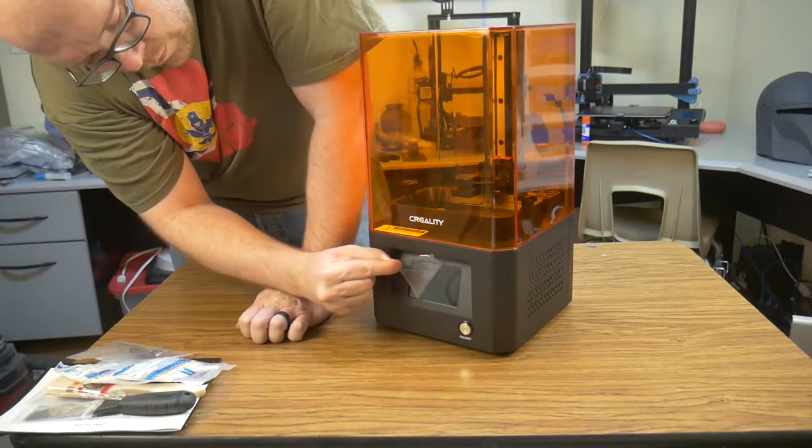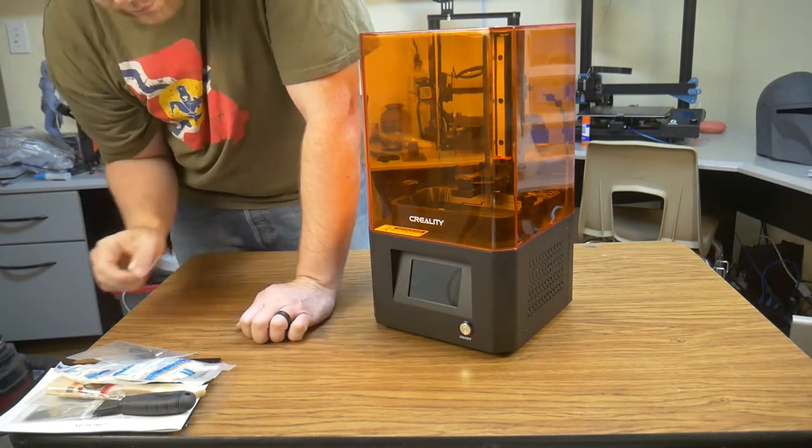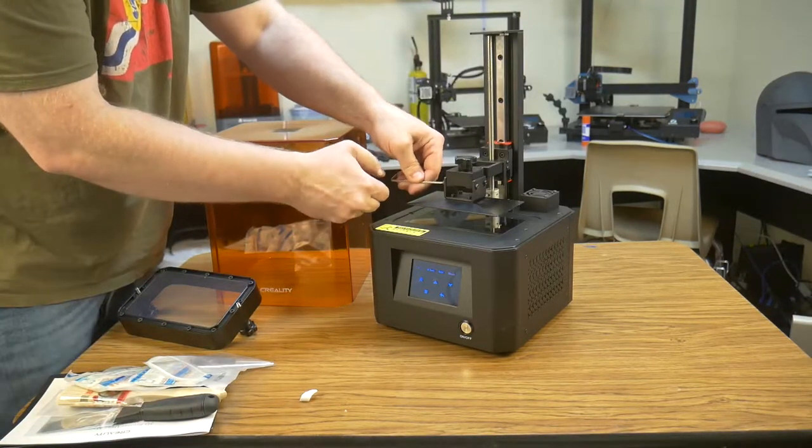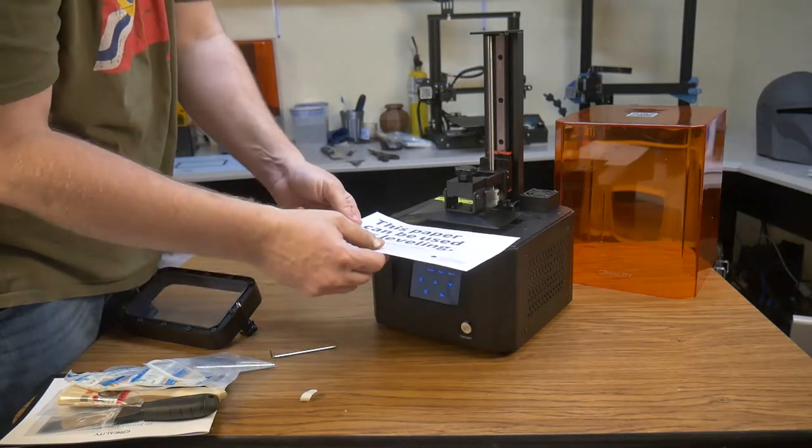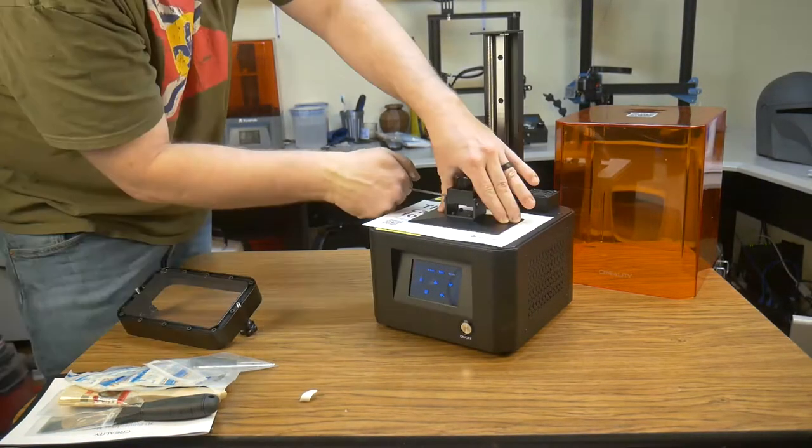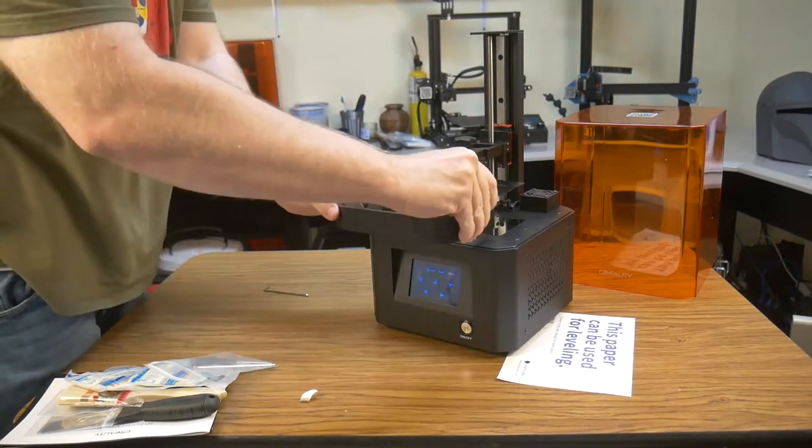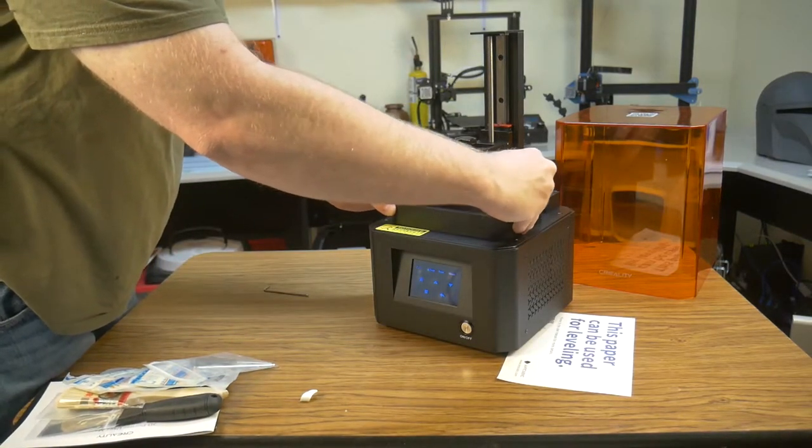Printer setup is very straightforward. It is the same process that is used across all brands. Attach the build plate, loosen the screws on the build plate, lay a piece of paper on the LCD screen, home the printer, hold down the build plate while you tighten the screws, raise the build plate, install the resin vat, and you are ready to go.